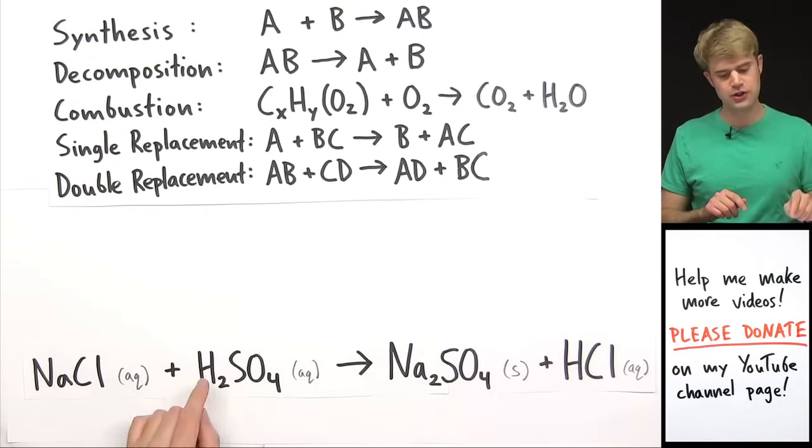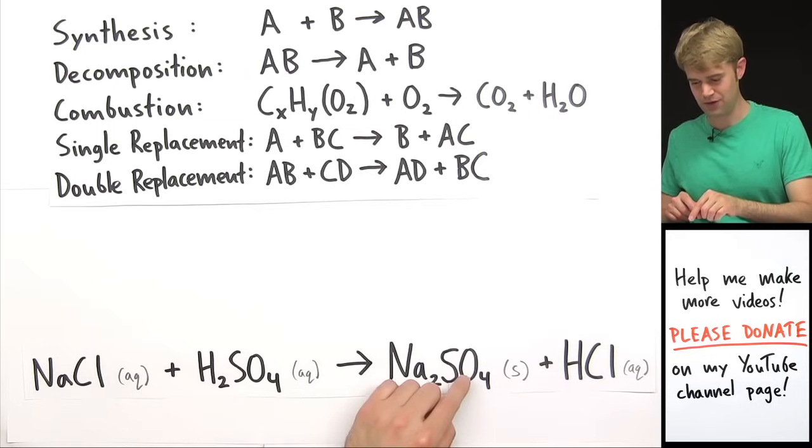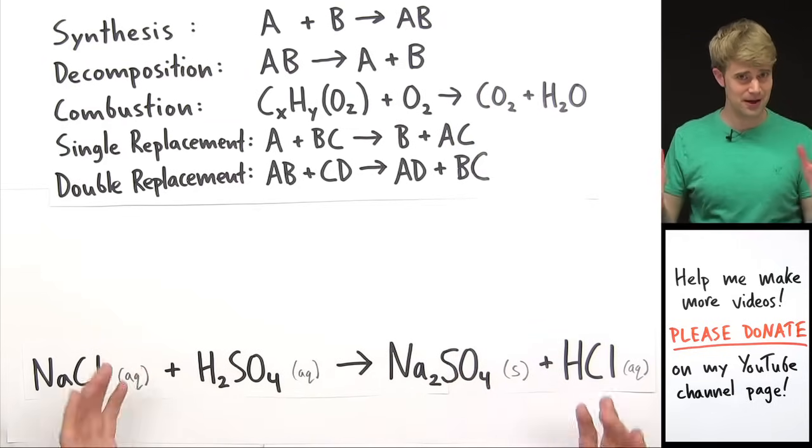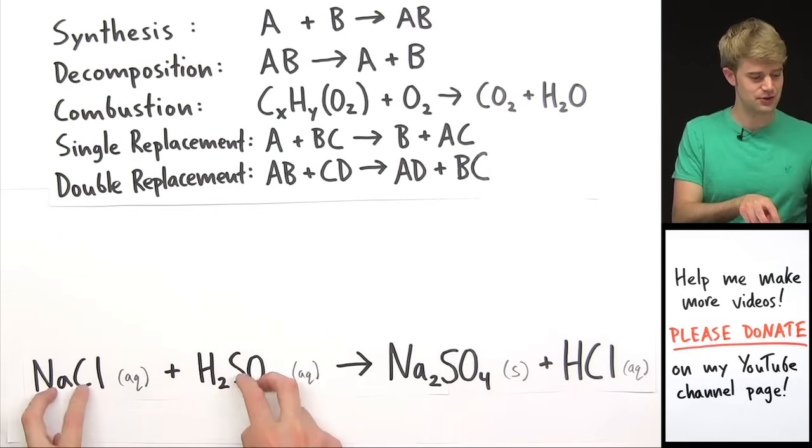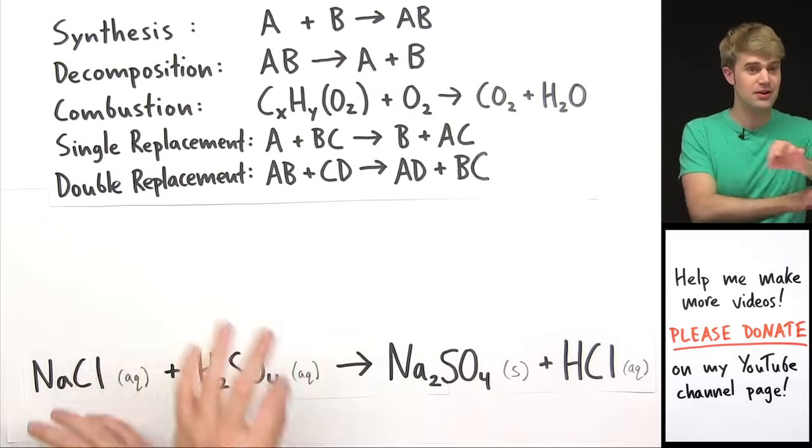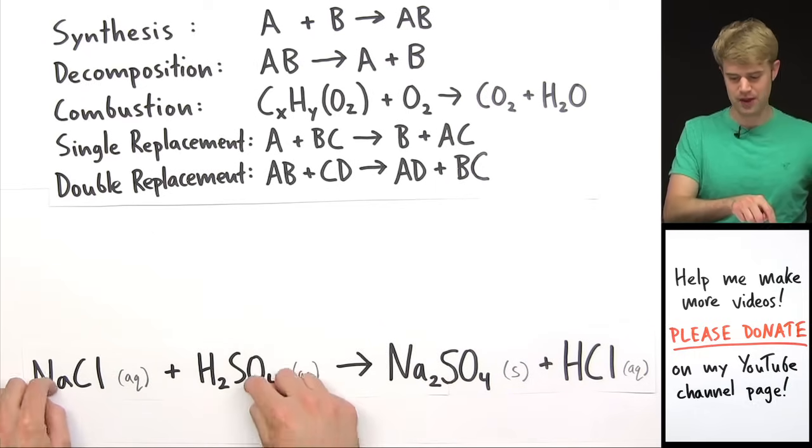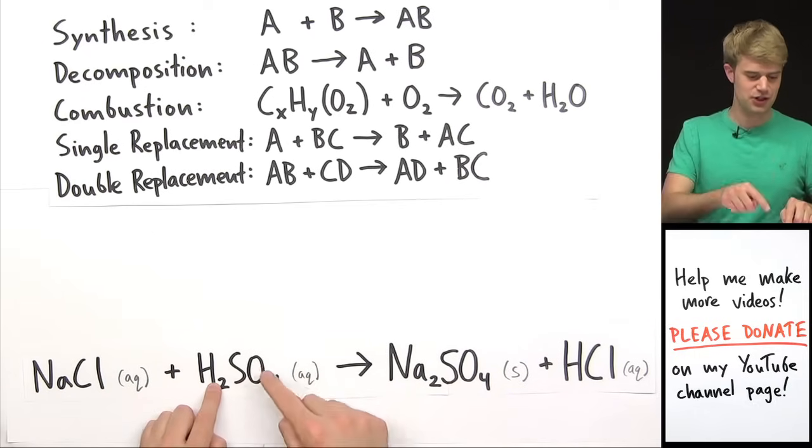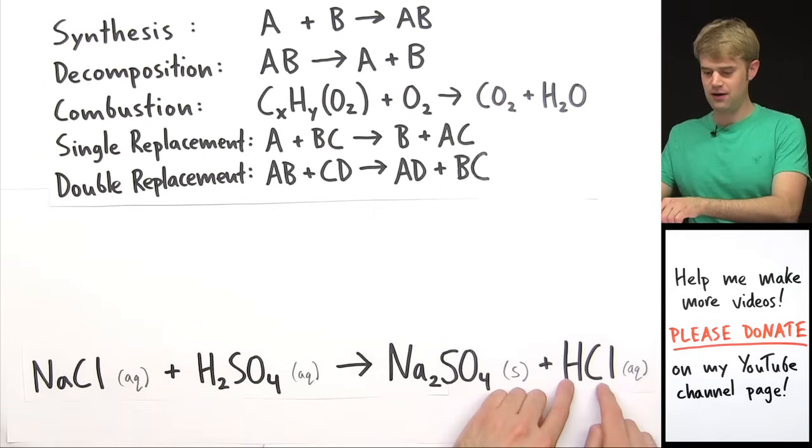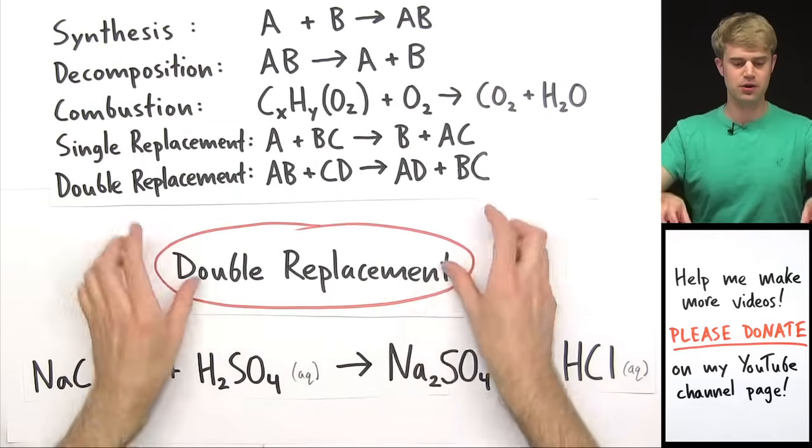Sodium chloride and H2SO4, known as sulfuric acid, come together to give us sodium sulfate and HCl, hydrochloric acid. So what's happening here is that we have two pairs of two different things. We've got Na and Cl and H and SO4. They switch places. So the Na that used to be paired up with the Cl ends up pairing up with the SO4. And the H that was initially paired up with the SO4 ends up paired up with the Cl. So this is an example here of a double replacement, a double replacement reaction.